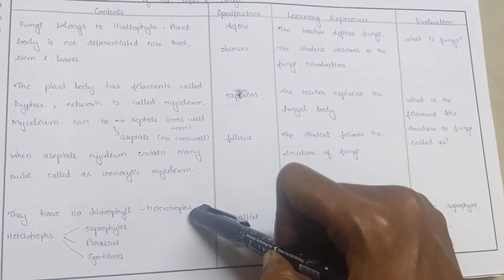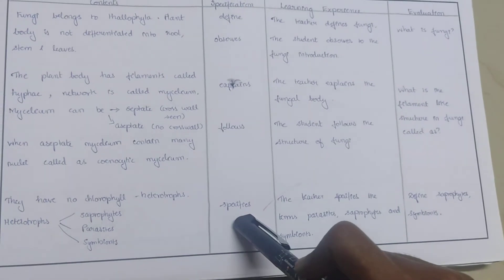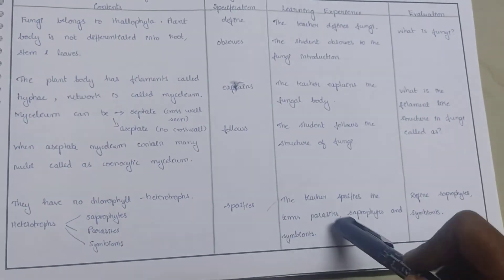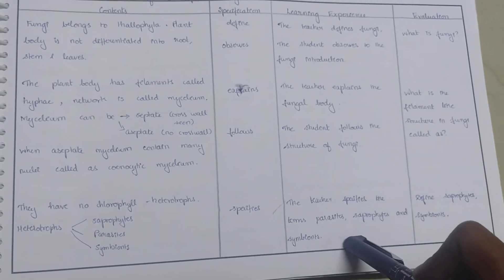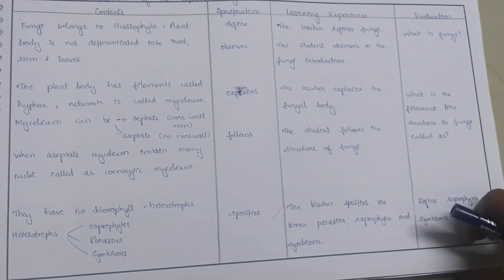Fungi which have no chlorophyll are called heterotrophs, which are of three types: saprophytes, parasites, and symbionts. The teacher specifies the terms parasites, saprophytes, and symbionts. Evaluation: define saprophytes and symbionts.